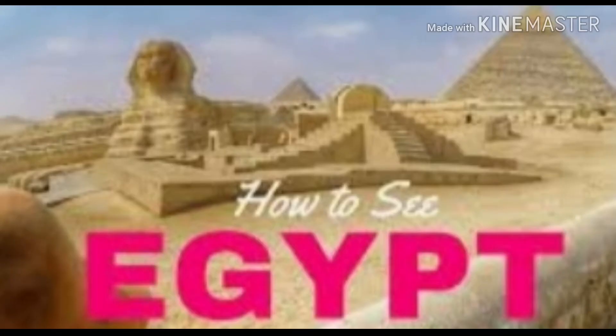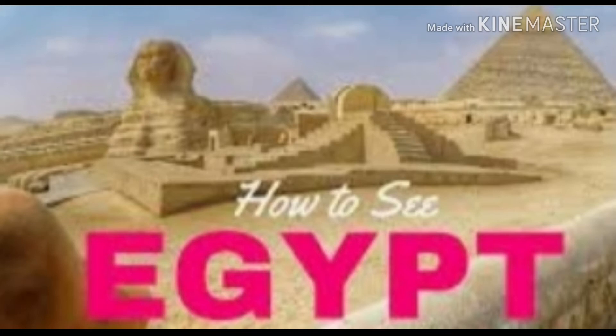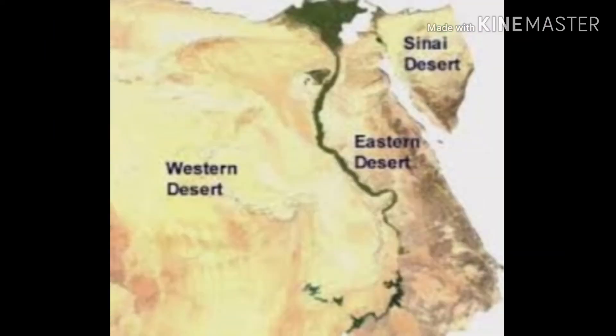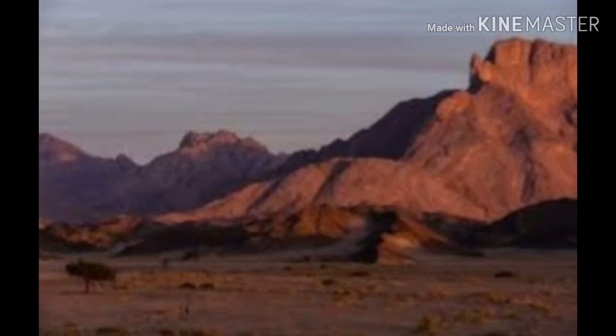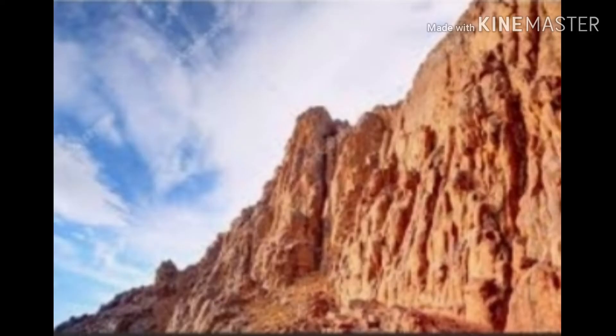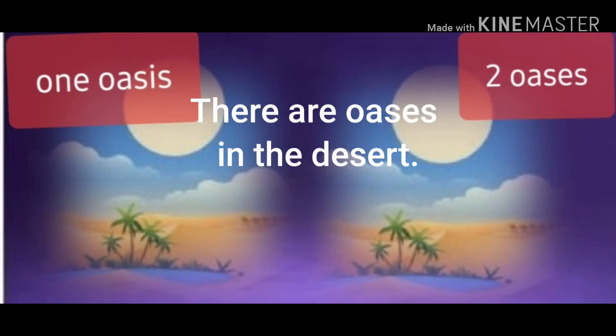There are a lot of beautiful places in Egypt. Let's see! In Egypt, there are deserts — there are three big deserts. There are mountains. This is a mountain, and this is another mountain. Egypt has the River Nile. There are oases in the desert.